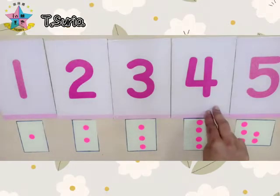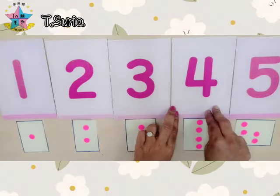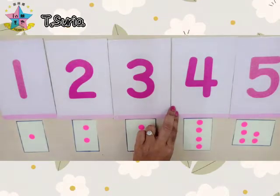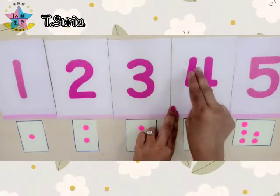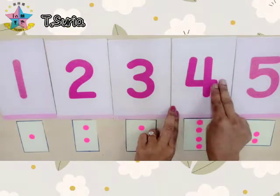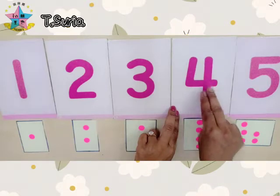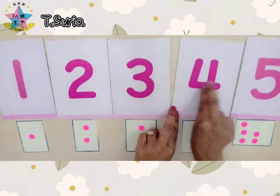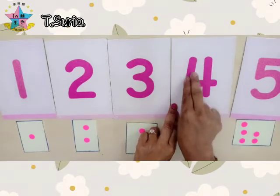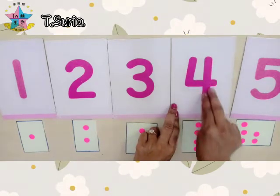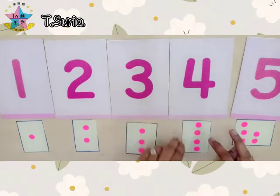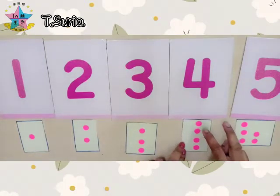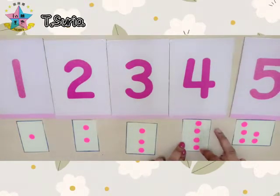Okay, what number is this? This is number four. Let's take two fingers and trace number four. Four, four, four. Come, count the object for number four. One, two, three, four.